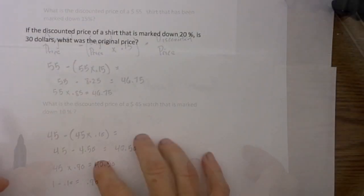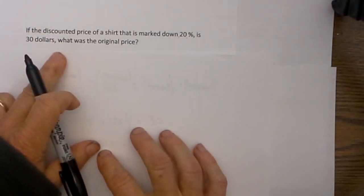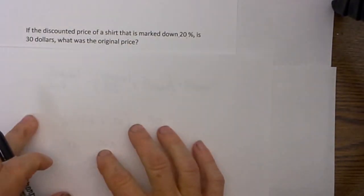Let's look at one that is just a little bit different. If the discounted price of a shirt that is marked down 20% is $30, what was the original price?